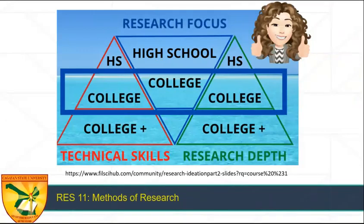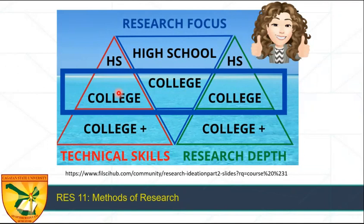You have a research subject back in high school. That means I am just reintroducing this again to you. So what is the difference of your research in high school and now that you are in college? In this figure, you see three triangles. The red triangle represents the technical skills. As you can see at the high school level, it is just by the tip of an iceberg. You just learned how to do the research. But now that you are in college, you have already an experience doing it, writing it. So your technical skills broaden.